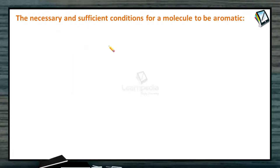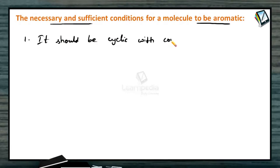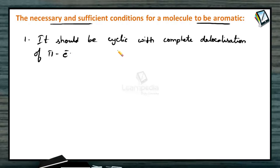Let us see exactly what are the necessary and sufficient conditions for a molecule to be aromatic. The first condition: the molecule should be cyclic with complete delocalization of pi electrons. That is the first necessary and sufficient condition for a molecule to be aromatic.